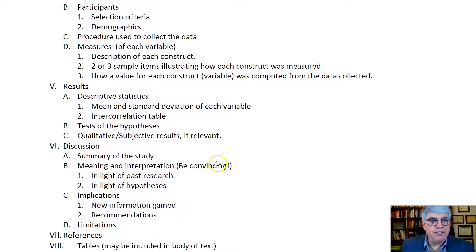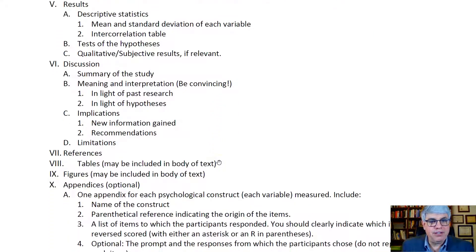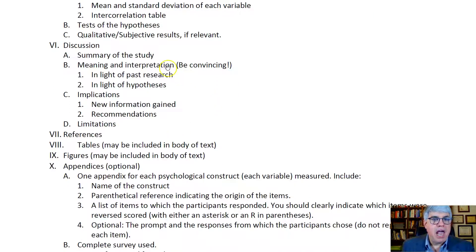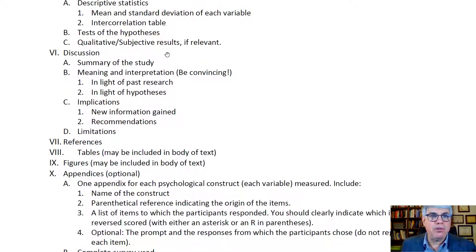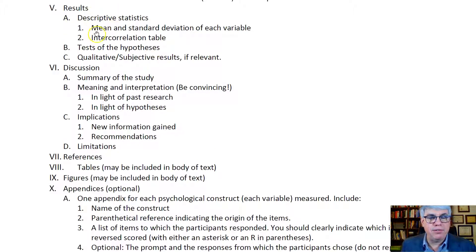The next section is the discussion section. You would start off with a summary of the study, a summary of the results. You summarize everything up to this point, but you don't use numbers. All the numbers stay in the results section. The discussion section starts off with a summary without any numbers, so everybody can read it and understand it, even if they don't have a stats background.